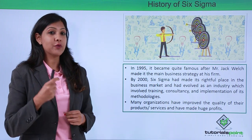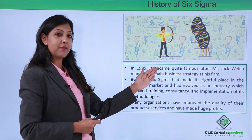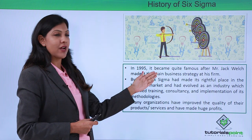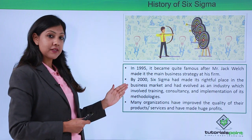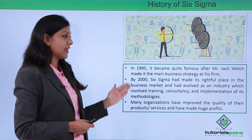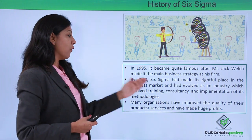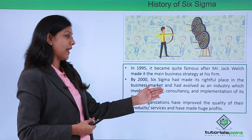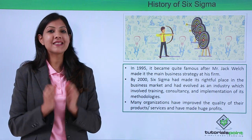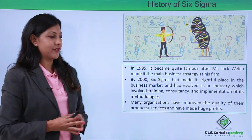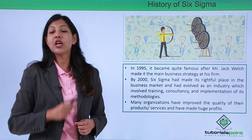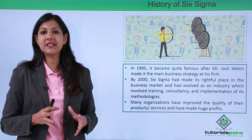It didn't end there — it went further. In 1995, Six Sigma became quite famous after Mr. Jack Welch made it the main business strategy at his firm. By the year 2000, Six Sigma had already made its rightful place in the business market and had evolved as an industry involving training, consultancy, and implementation of the methodology. By 2000, organizations all over the world were using Six Sigma, and many improved the quality of their products and services, making huge profits as a result.